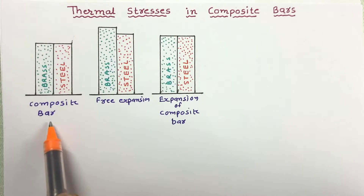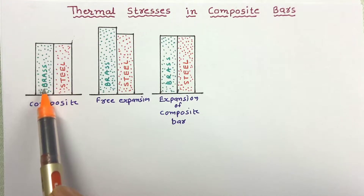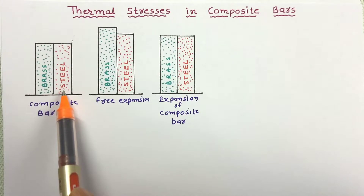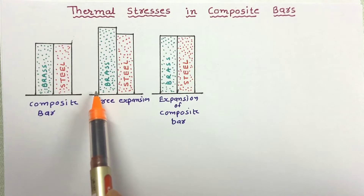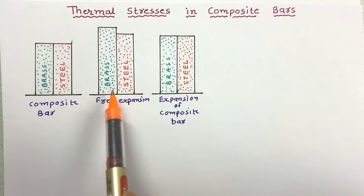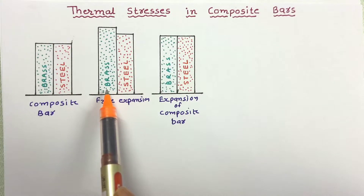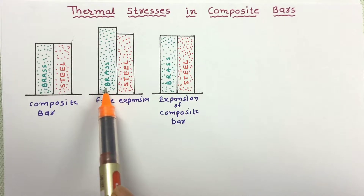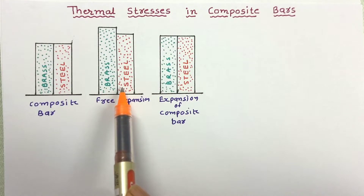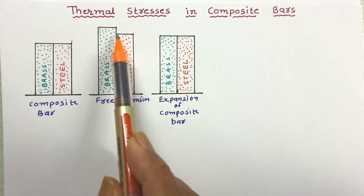In the figure we can see this is a composite bar made up of two different bars — one made up of brass and the second made up of steel. Let the composite bar be heated through some temperature. If both bars were free to expand, the coefficient of thermal expansion of brass is more than that of steel, so brass will expand more than steel. The free expansion of brass is more than that of steel.